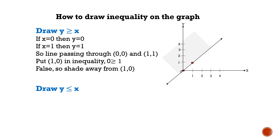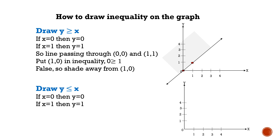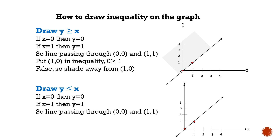Now draw the graph of y less than or equal to x. If x equals 0, then y equals 0. If x equals 1, then y equals 1. So the line passes through (0, 0) and (1, 1).